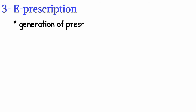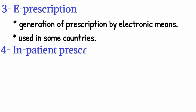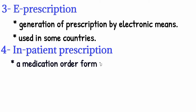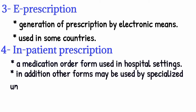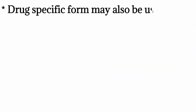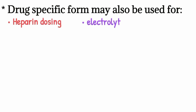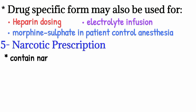Number four, inpatient prescription — a medication order form used in the hospital setting. In addition, other forms may be used within the hospital by specialized units such as infectious disease, cardiac care, pediatrics, and others. Drug-specific forms may also be used, as for heparin dosing, electrolyte infusions, and morphine sulfate in patient-controlled anesthesia.